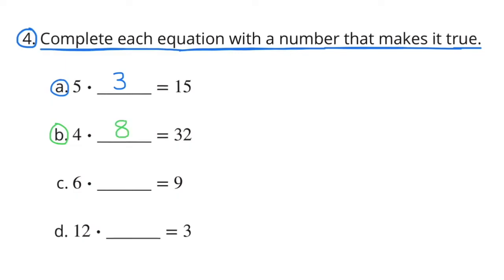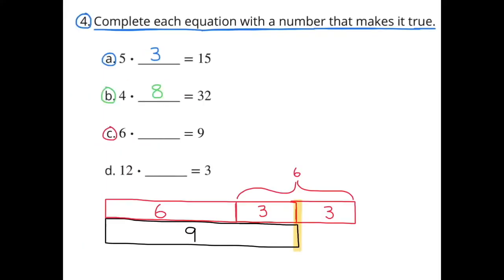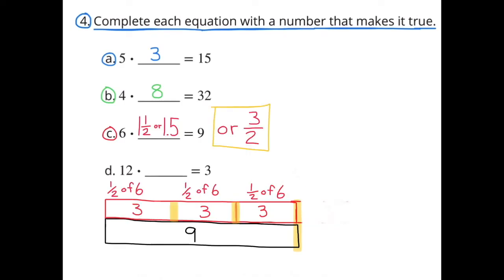C: 6 times what number equals 9? This illustration shows how 6 goes into 9 one and a half times. 3 is half of 6, and 3 goes into 9 three times, so 6 times 3 halves also equals 9. So 6 times 1 and a half, or 6 times 1.5, or 6 times 3 halves equals 9.